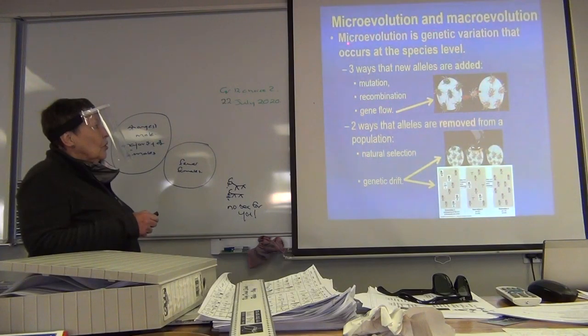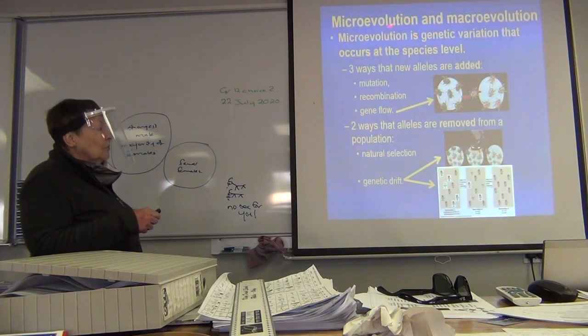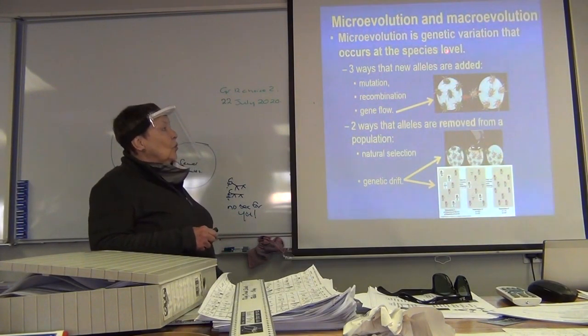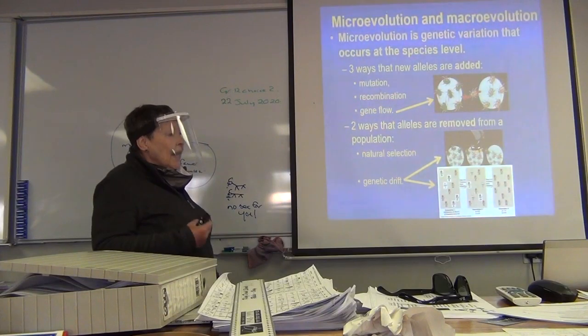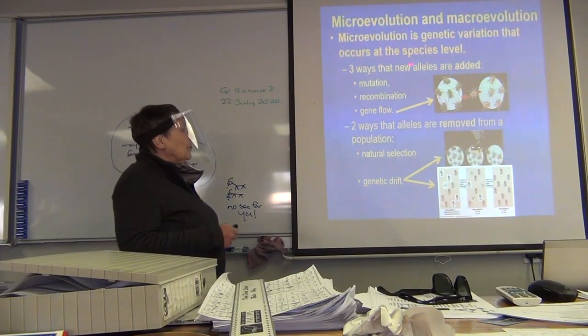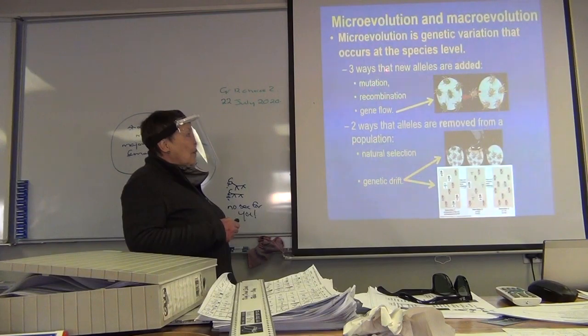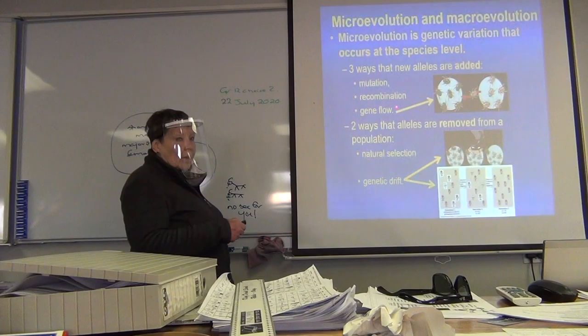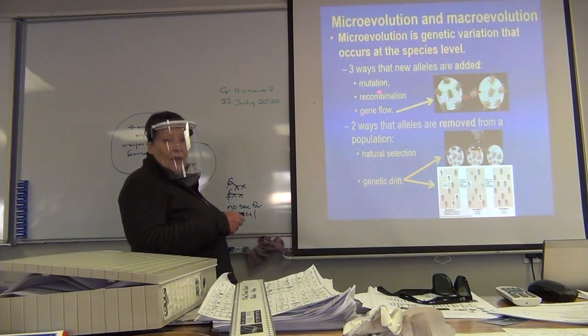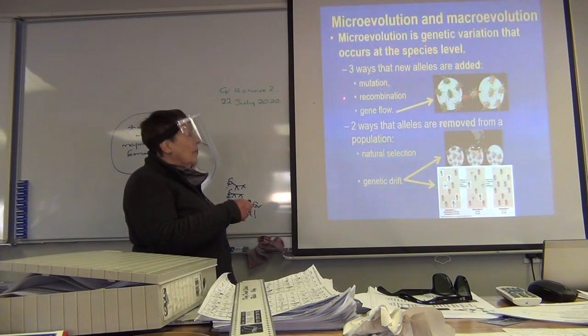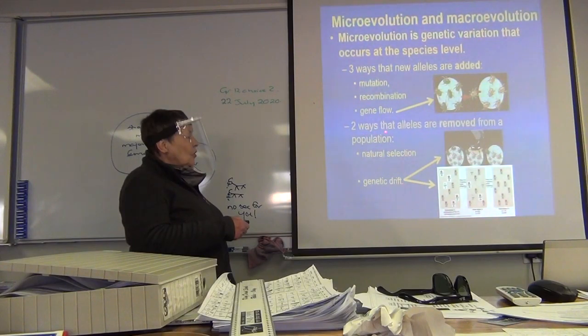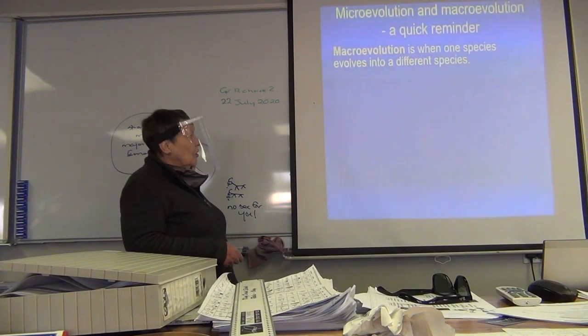Microevolution and macroevolution. Remember, we've spoken about genetic variation that occurs at the species level. So it's within a species, it's not a whole new species. In animals occurs by mutation, recombination - remember meiosis, crossing over, recombination - that adds certain alleles and gene flow. We've spoken about that. And two ways in which alleles are removed from the population: natural selection and genetic drift.